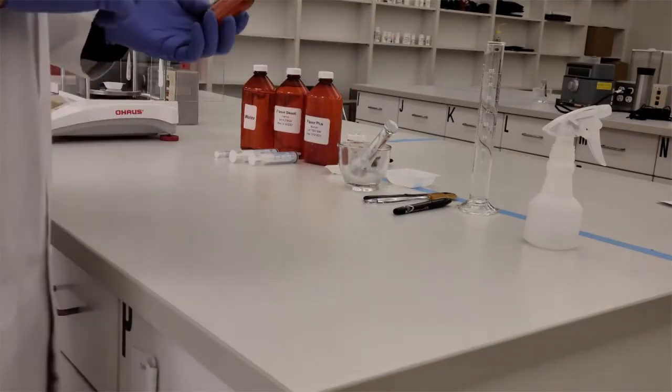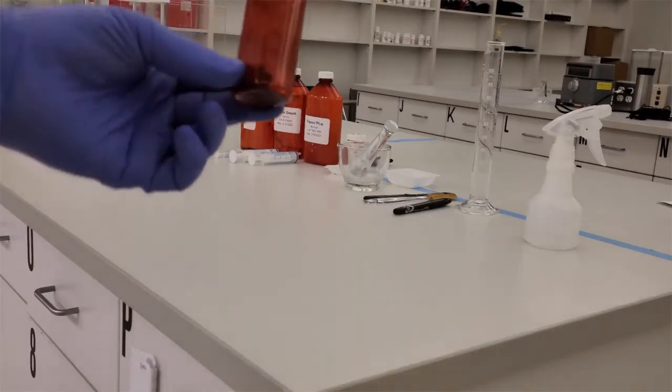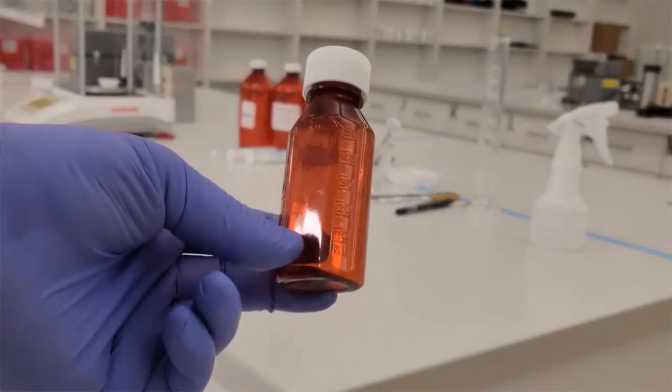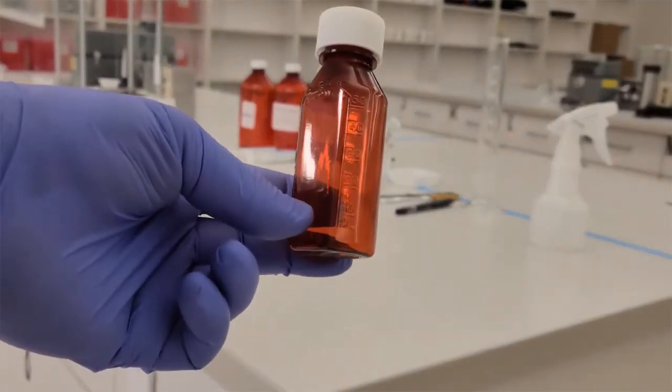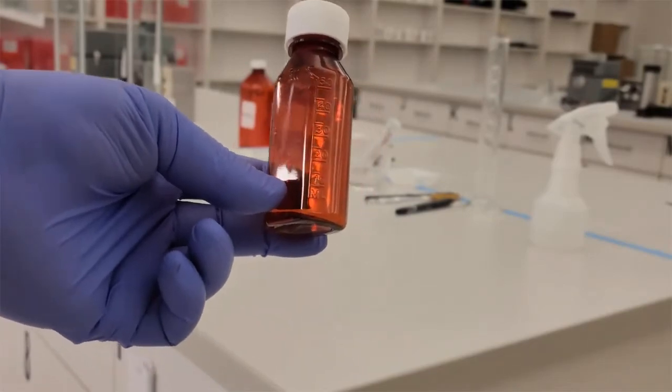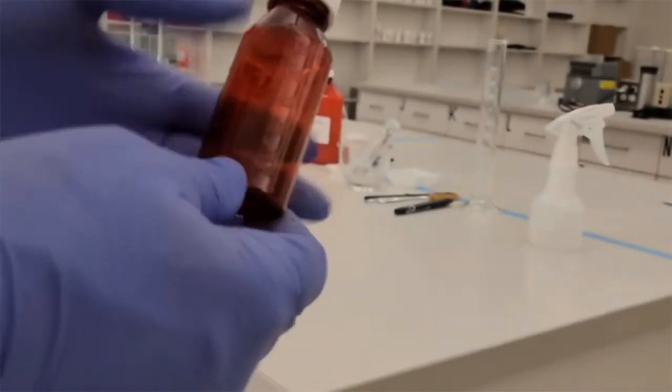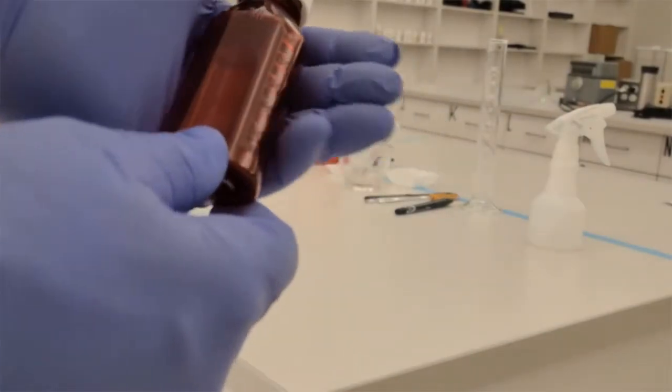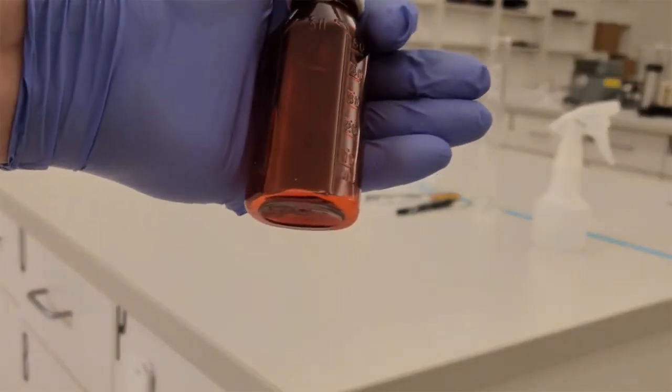Now I'm going to first calibrate a prescription bottle. The amber bottle that you see here does have markings on it. Those markings are estimated. They're good for dispensing products, but they are not appropriate when we are compounding a product to a final volume. So we can't use those markings.